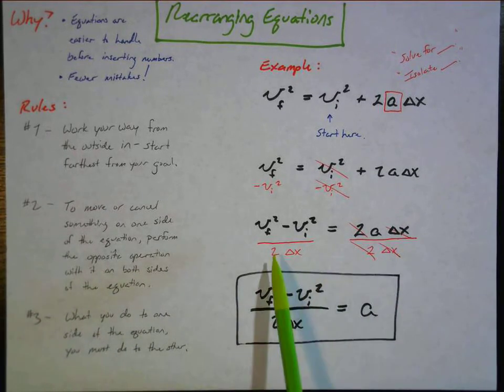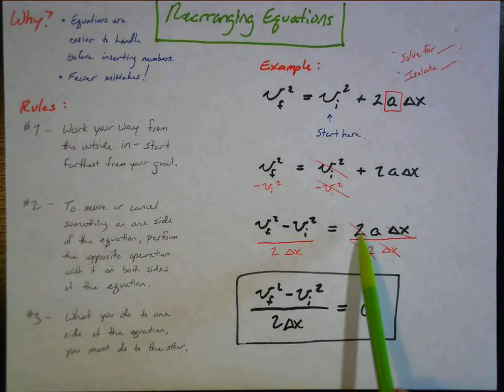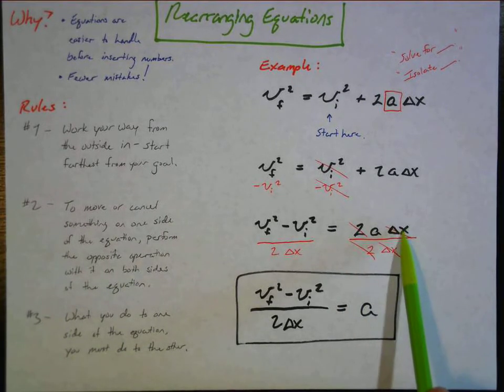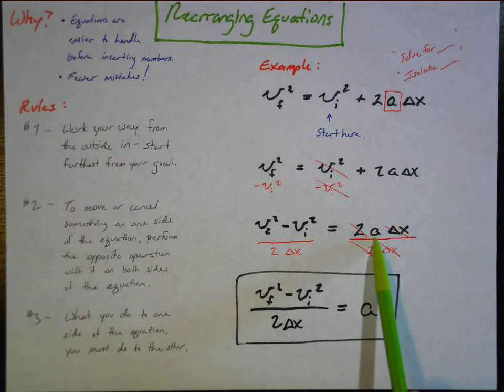So we divide by two and divide by displacement, but we have to do that on both sides. Divide by two and divide by displacement. Here on this side, two divided by two cancels out, delta x divided by delta x cancels out and they go away, and we're left with acceleration all by itself. Hey, we got there!